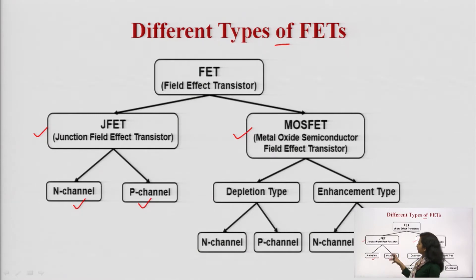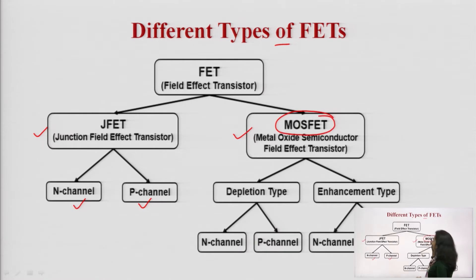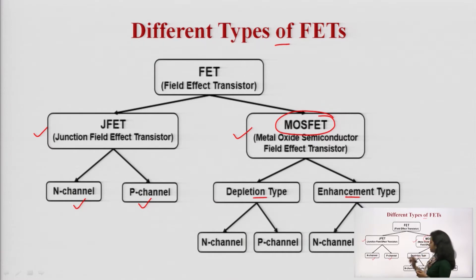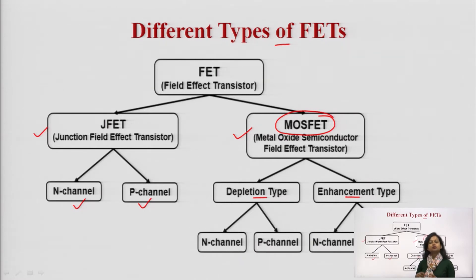It may be an N-Channel JFET or P-Channel JFET. MOSFET — Metal Oxide Semiconductor Field Effect Transistor — is of two types: it may be a depletion type MOSFET or an enhancement type MOSFET. In the case of depletion type MOSFET, the channel is present, while in the case of enhancement type, the channel is actually absent — it has to be enhanced. That is the basic difference.